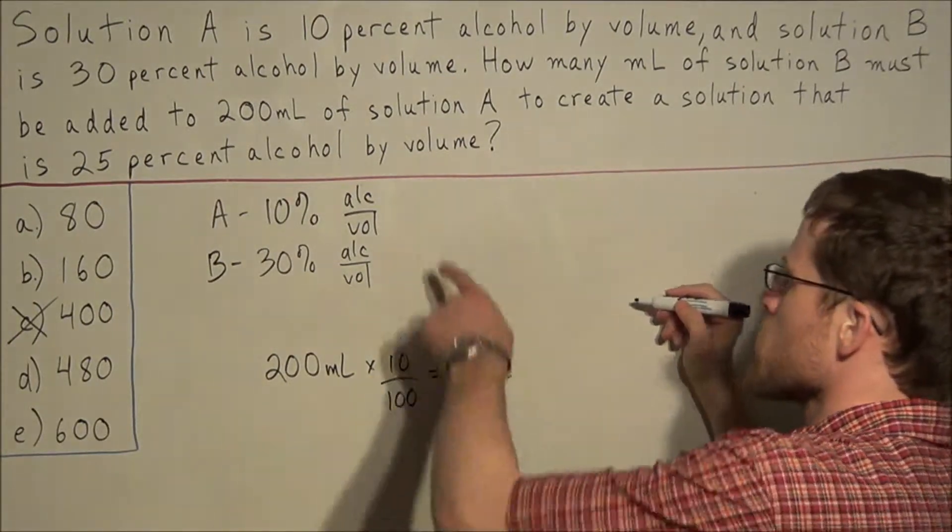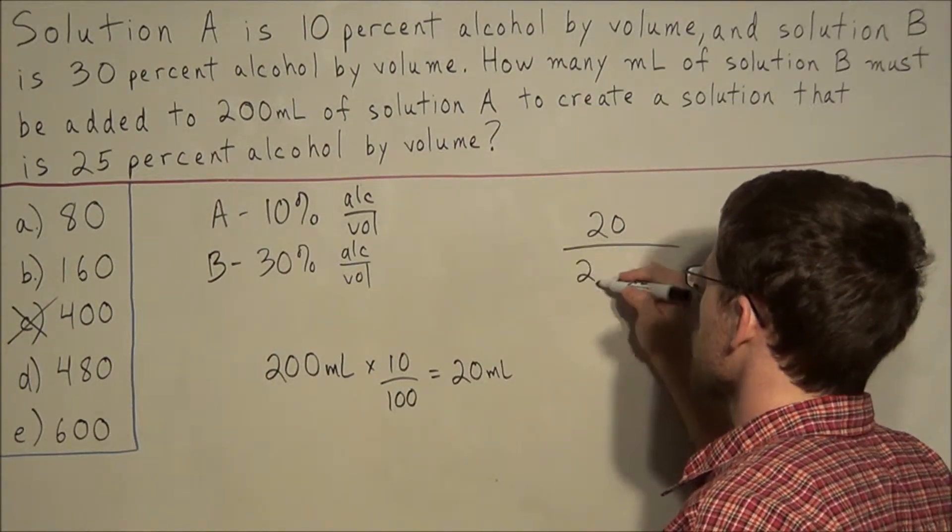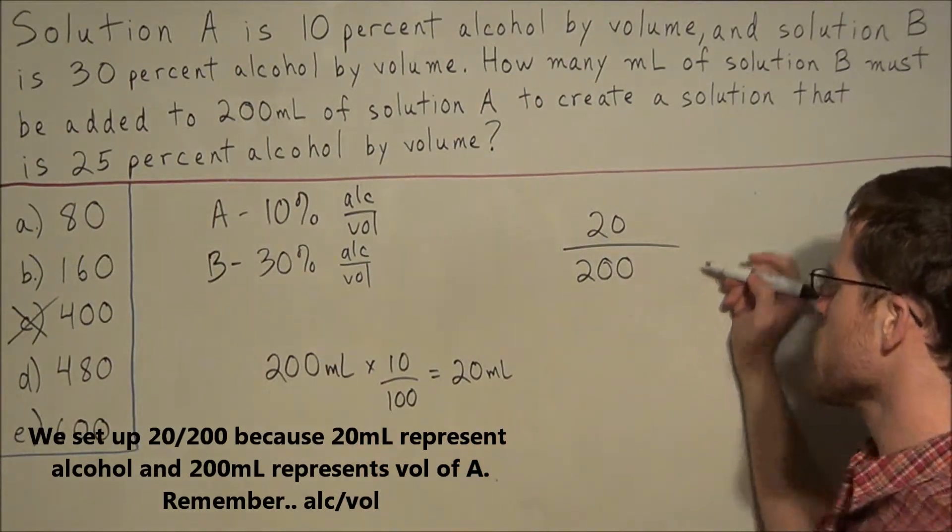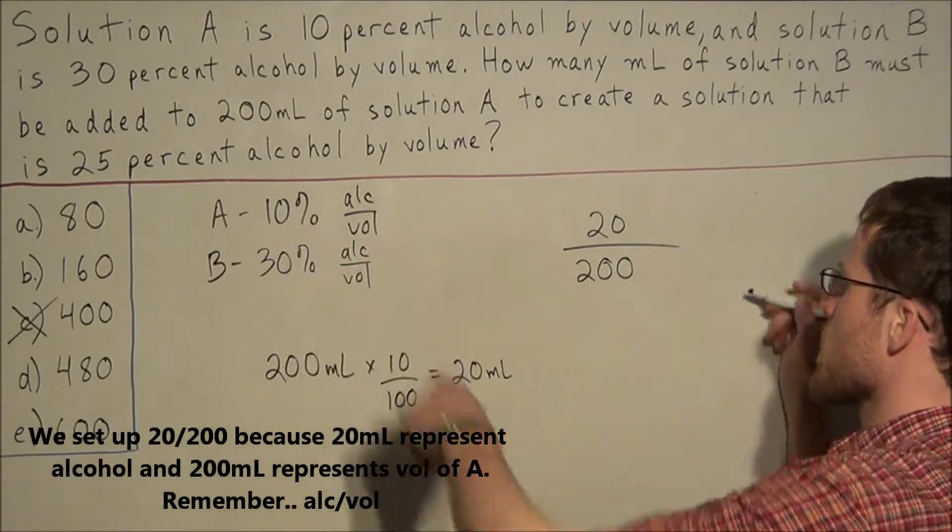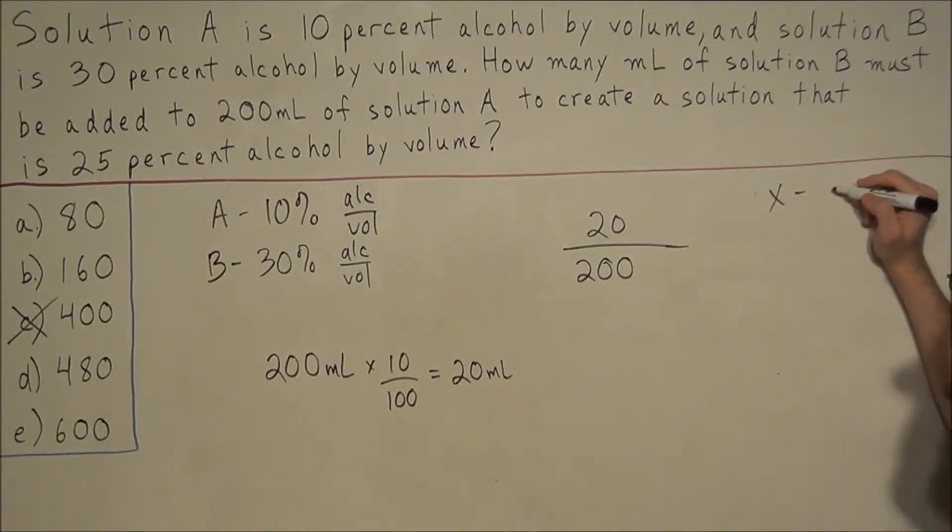Using this information, we're looking at alcohol by volume. So we're setting up 20 over 200, the two pieces of information, which once again we said reduces to 10%. And now what we're looking for, we'll call it X, is the milliliters of solution B needed.